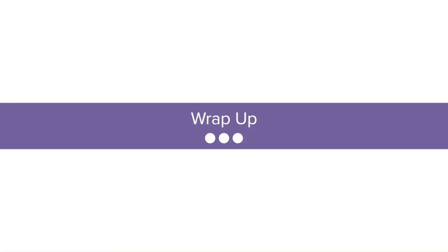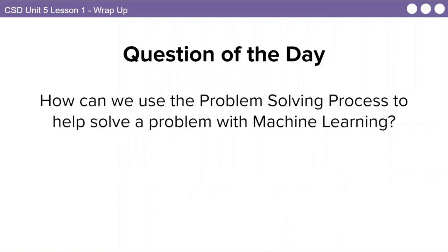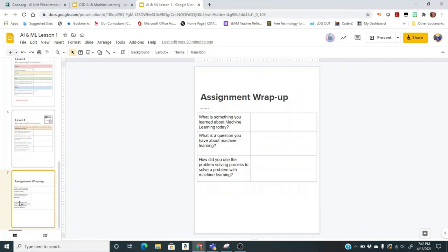Throughout this unit, we will learn how to use machine learning to solve problems. We need to always be thinking about what is the impact and who is being included or excluded. Now go back to your document for the wrap-up and answer these three questions: What is something new you learned about machine learning today? What is a new question you have about machine learning? And how can we use the problem-solving process to solve a problem with machine learning? Answer these questions on your document, and when you're finished you are ready to turn it in. We're going to be moving on to lesson two.